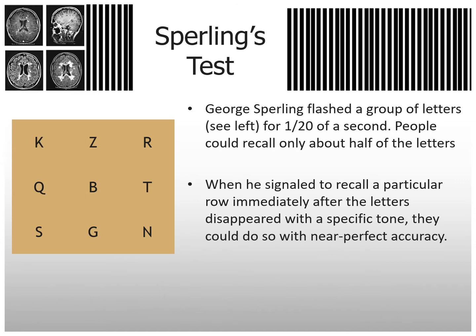This is Sperling's test. George Sperling flashed a group of letters — you can see the example on the left — for just a fraction of a second, one twentieth of a second. People could then recall only about half the letters when he just flashed it. But when he signaled a particular row immediately after the letters disappeared with a specific tone, they could do so with near perfection.